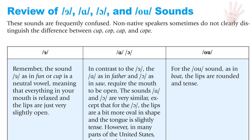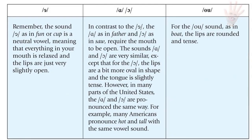Review of Uh, Ah, Aw, and O sounds. These sounds are frequently confused. Non-native speakers sometimes do not clearly distinguish the difference between cup, cop, cap, and cope. The Uh sound, as in fun or cup, is a neutral vowel — everything in your mouth is relaxed and the lips are just very slightly open. In contrast, Ah and Aw require the mouth to be open. Ah and Aw are very similar except that for Aw the lips are a little more oval in shape and the tongue is slightly tense. In many parts of the United States, Ah and Aw are pronounced the same — for example, many Americans pronounce 'hot' and 'tall' with the same vowel sound.